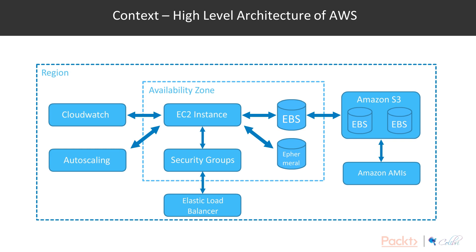For EU users we have three regions: one in Ireland, one in London, and one in Frankfurt. Within each of those regions there are multiple availability zones. Think of an availability zone as a data center, and each of those availability zones are connected together by very high throughput, low latency networking — so similar to connecting servers within a data center.